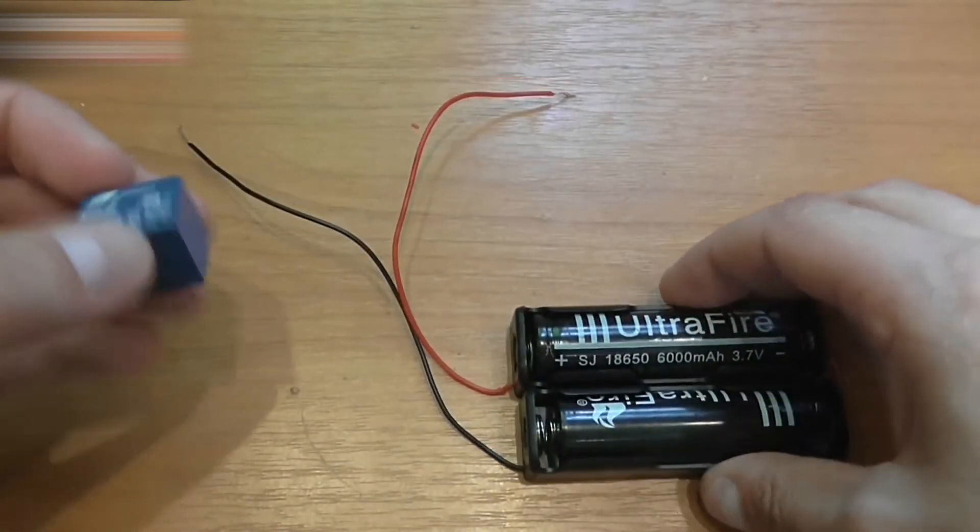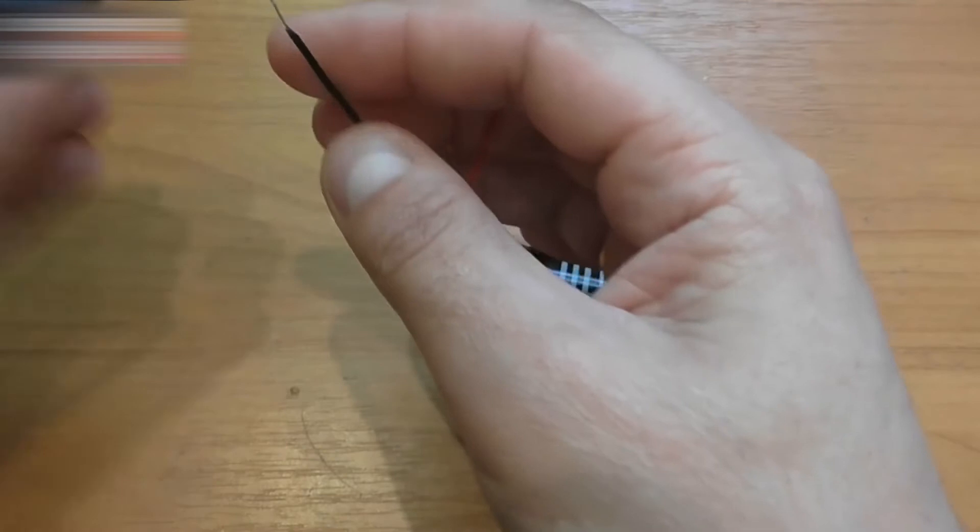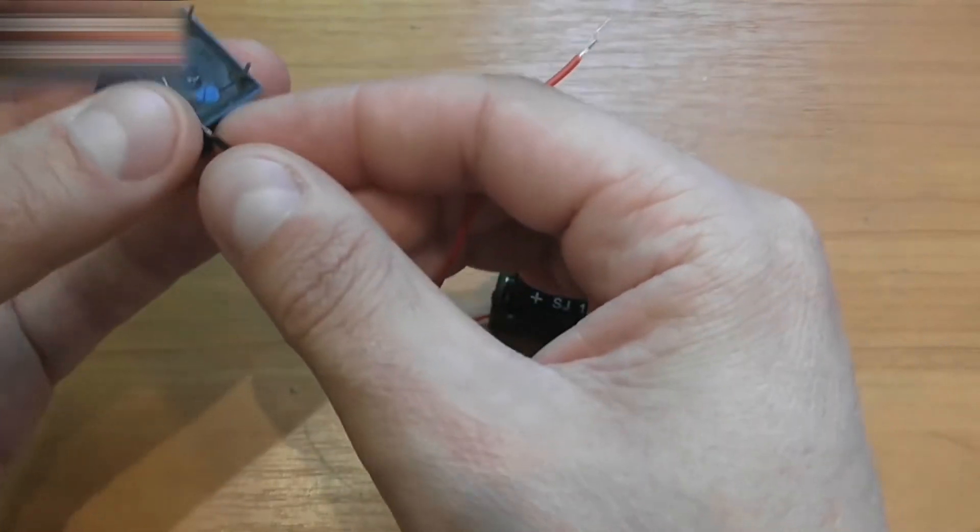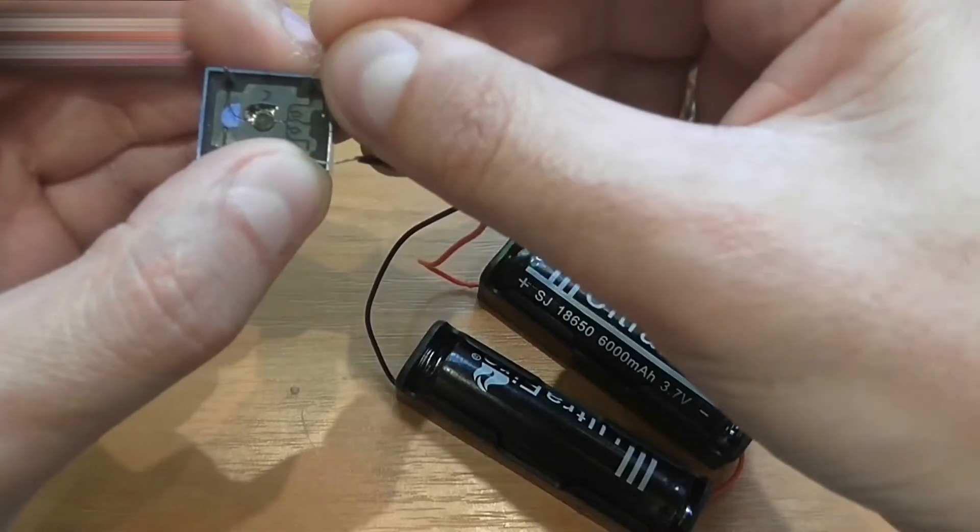A normally open relay contact. The relay's rated voltage is 9V, and the total voltage of the batteries is around 8V. This should be enough for the relay to operate.